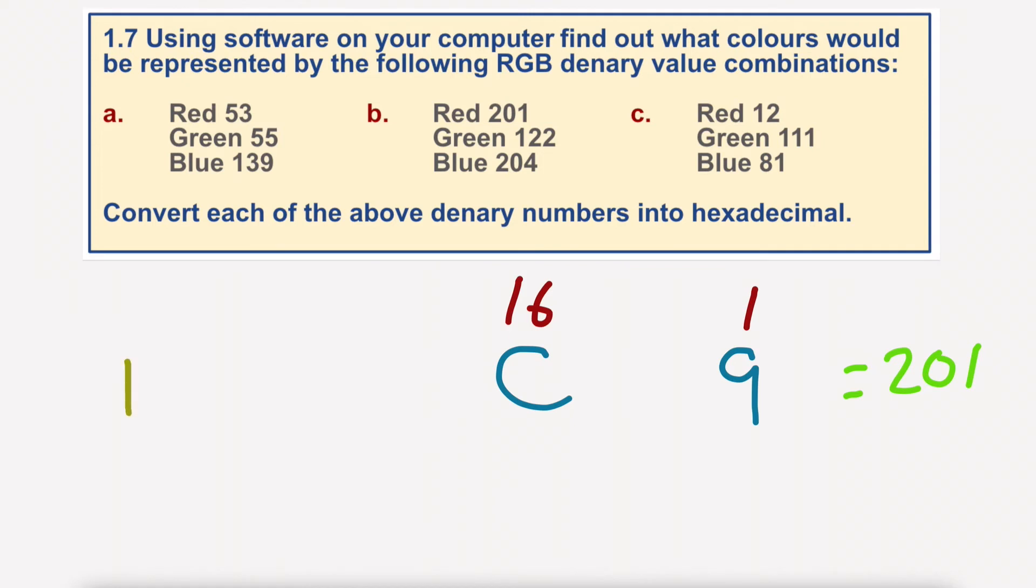The next one is 122. So again, 7, I believe. 7 times 16 equals 112. So we'll take that off to leave us with 10. So it would be 7, and 10 is obviously A, so that would be a value of 7A. So that equals 122.